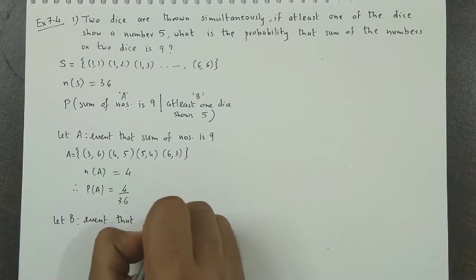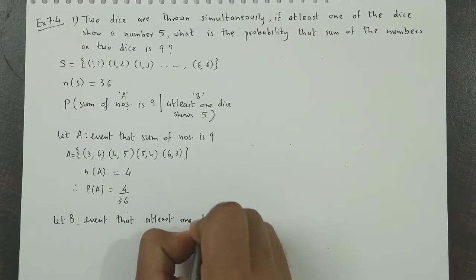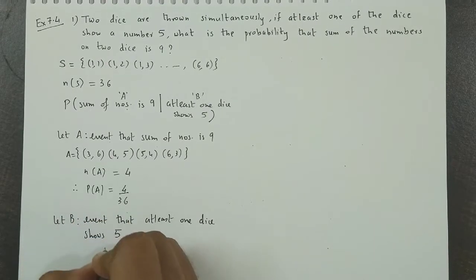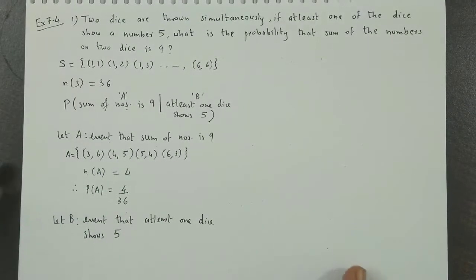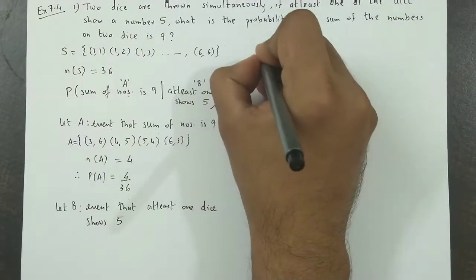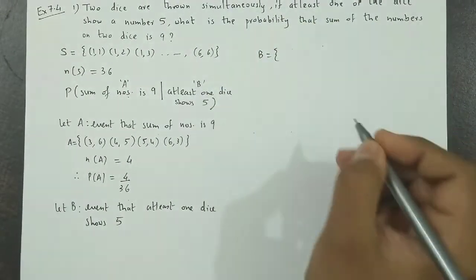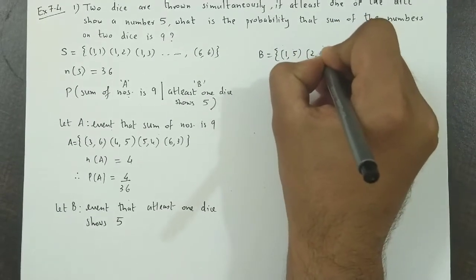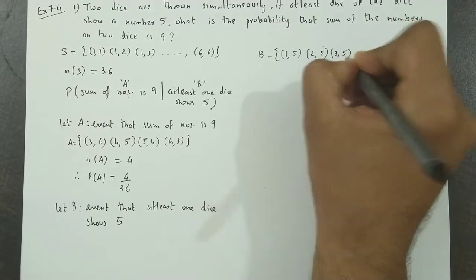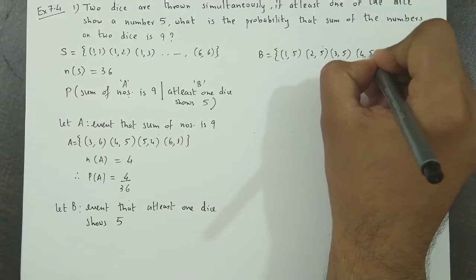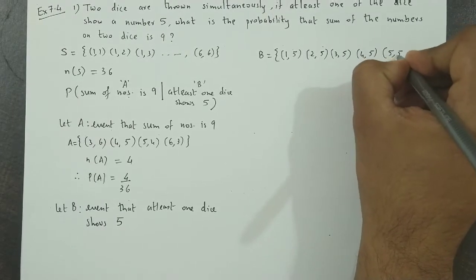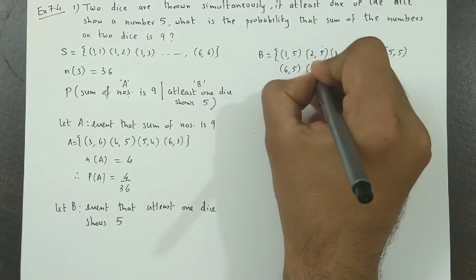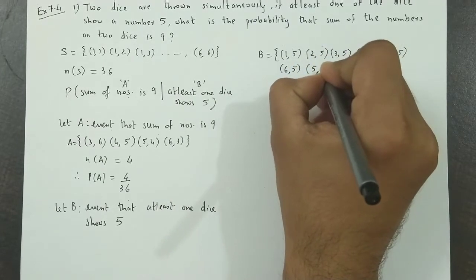At least one dice shows five. It should show five, at least one of the dice. So here the outcomes would be: that would be (1,5), (2,5), (3,5), (4,5), (5,5), (6,5). Then (5,1),